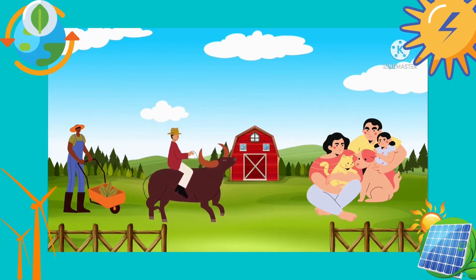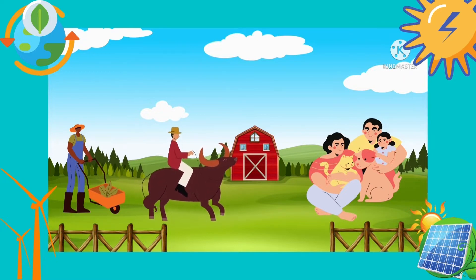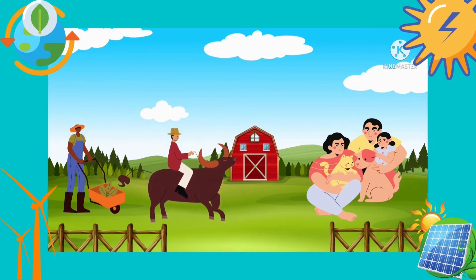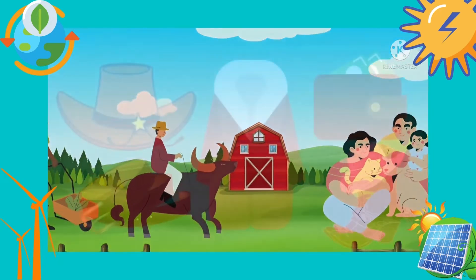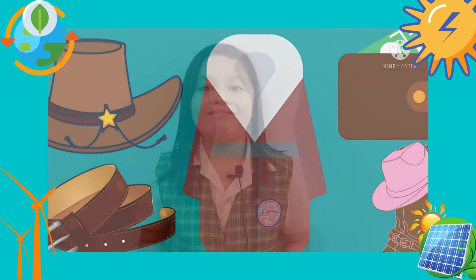Animals also help us in our daily activities. Like they can give us transportation, they also help our farmers to harvest crops, and they can also be our friends to make us happy every day. The skin or fur of some animals is used for making bags, belts, shoes, slippers, coats, and wallets too.